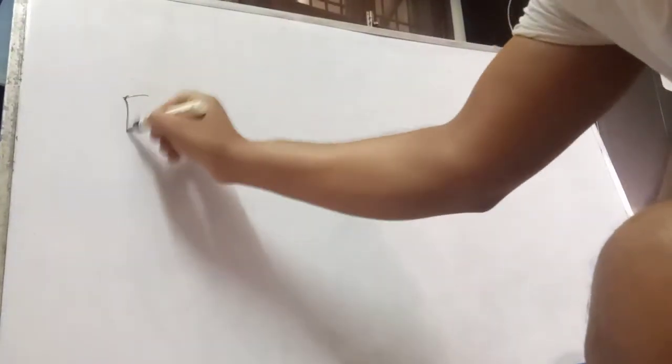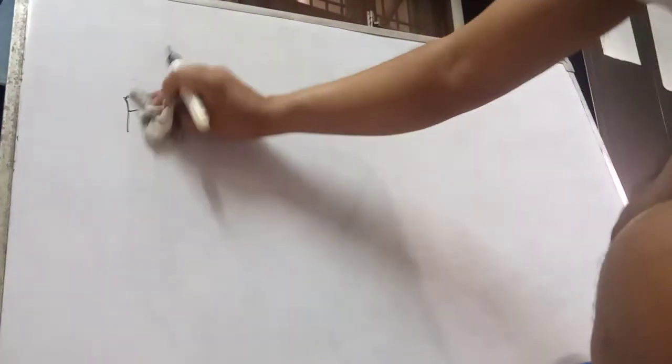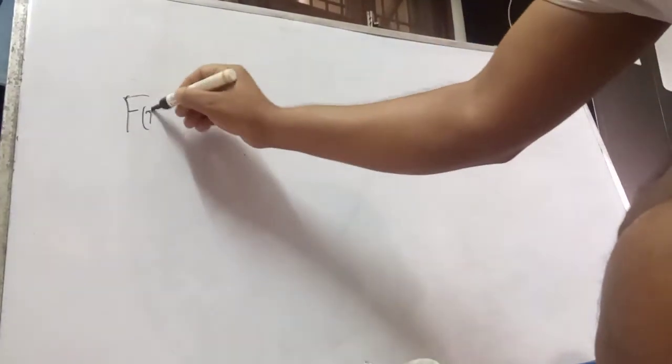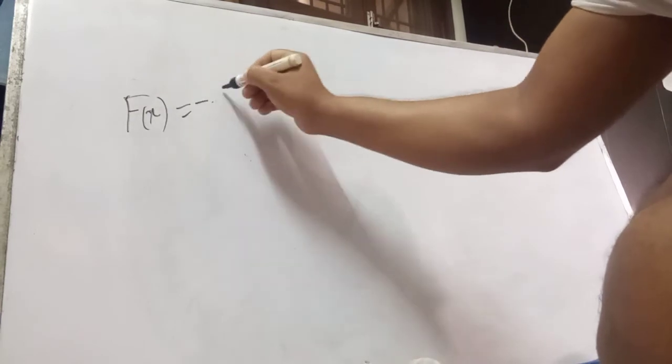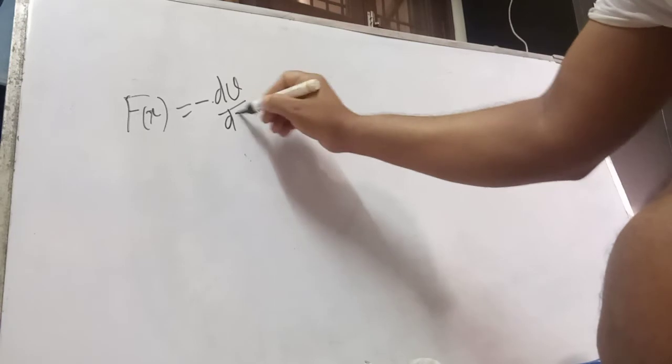Hello friends, my name is also Kumar Sahu. I am an online teacher. So we continue our discussion on potential energy. We know that force F of x equals minus dV upon dx, where V is the potential energy.